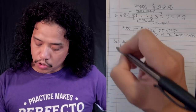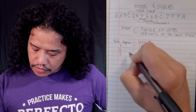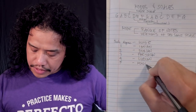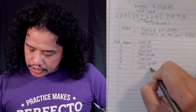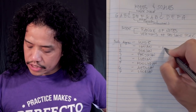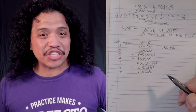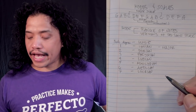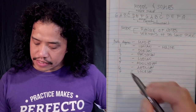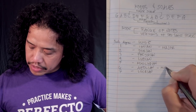Each mode is named as follows: the mode based on the first degree is called Ionian, the second degree is Dorian, the third is Phrygian, the fourth is Lydian, the fifth is Mixolydian, the sixth is Aeolian, and the seventh is Locrian. You can also consider Ionian as your major scale. Looking back to part two of this series where we talked about key signatures and relative majors and minors, the sixth degree of the major scale is the relative minor scale — so the Aeolian mode is our natural minor scale.